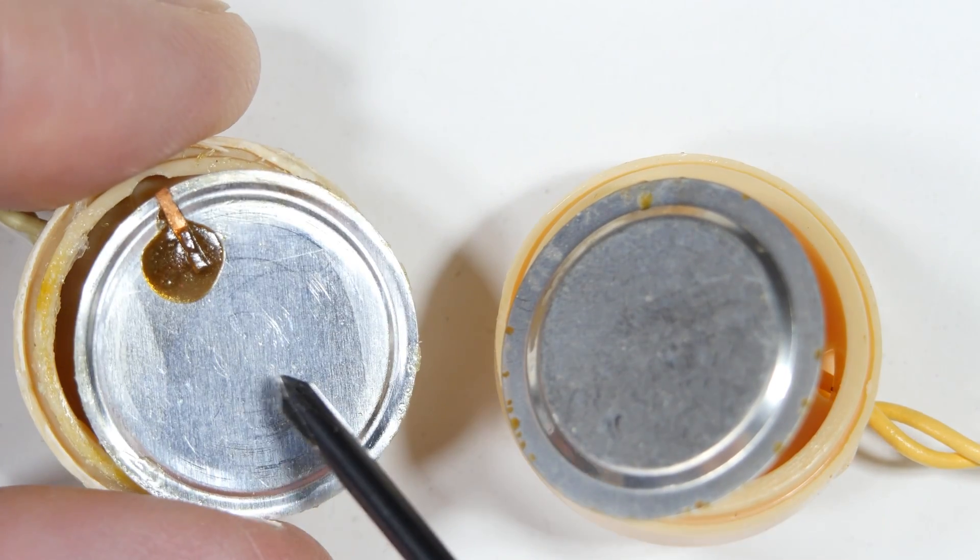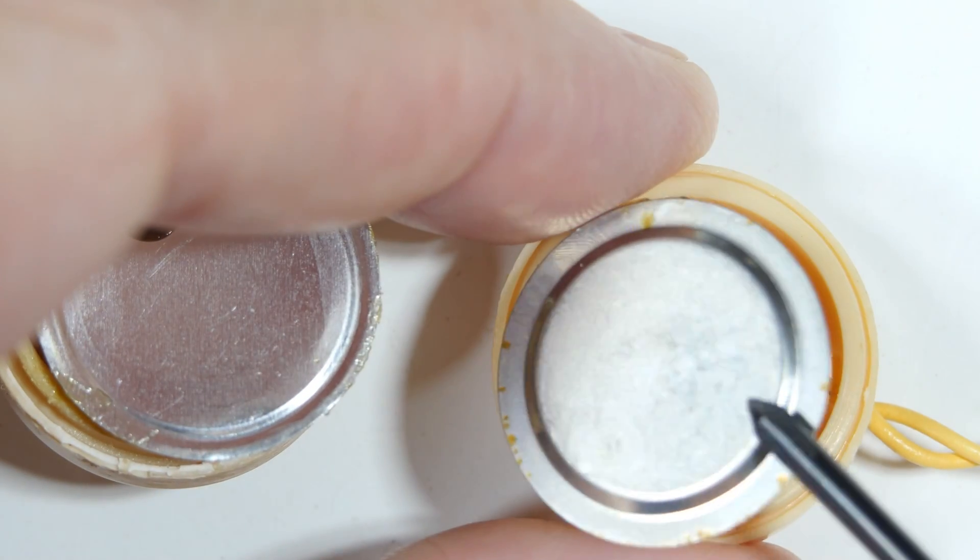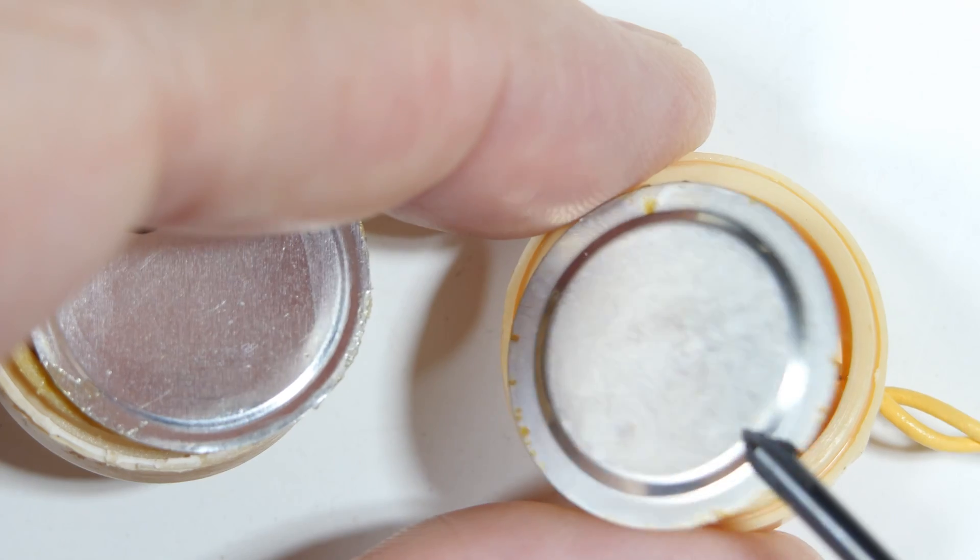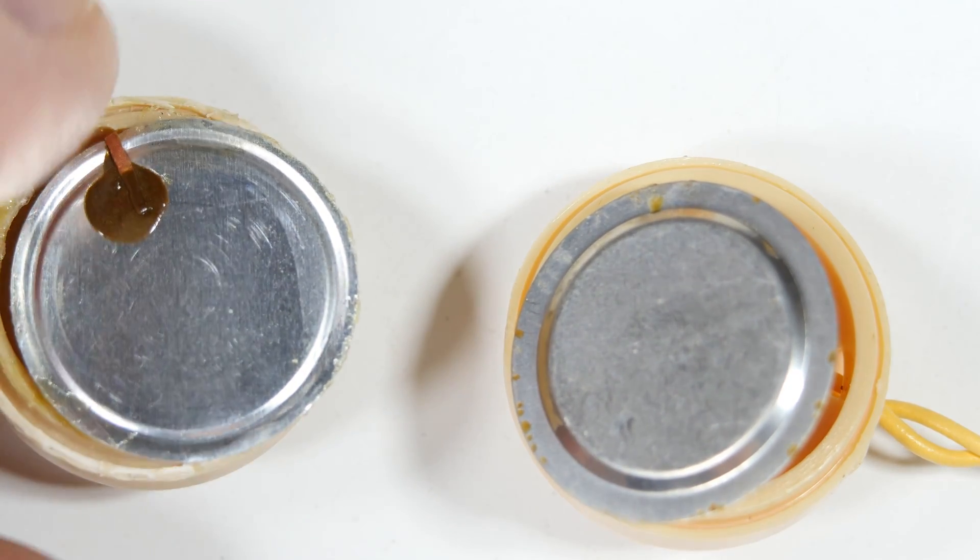You can see the glue around here. This one was actually glued down, this diaphragm was glued down, and this one was not. This one sounds like aluminum, this one sounds like steel, stainless steel maybe.